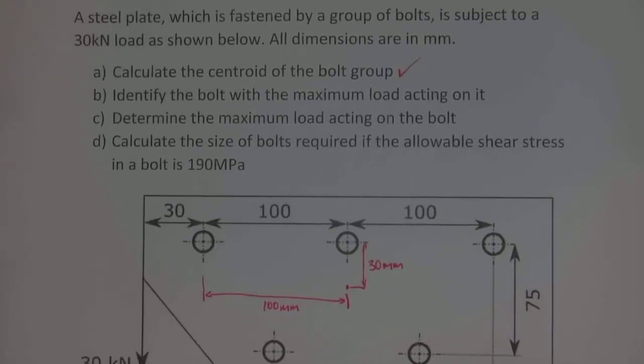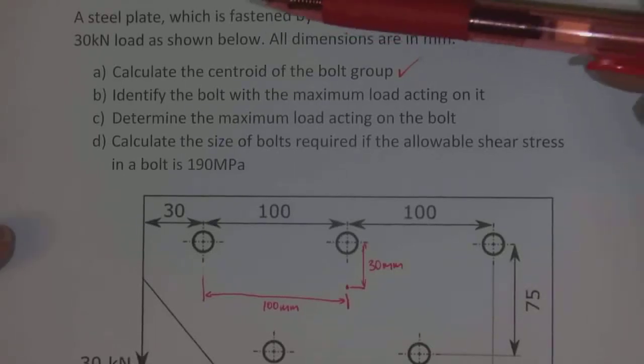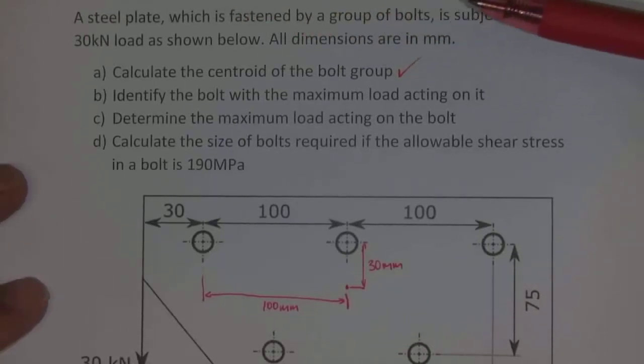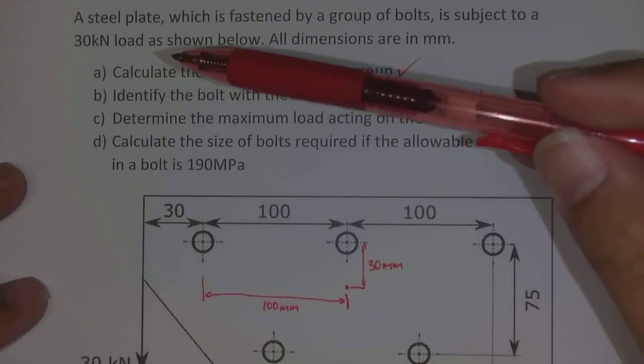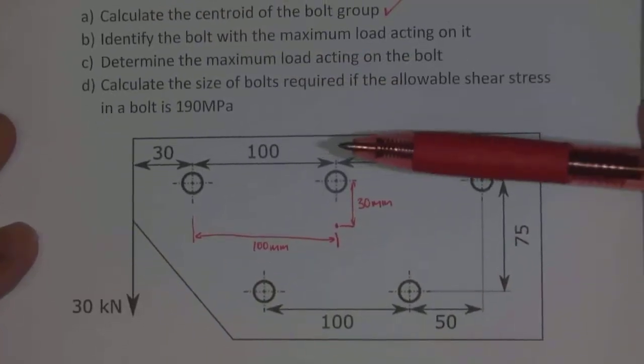Hi guys. So in this video we're continuing to solve this question where we have a steel plate which is fastened by a group of bolts. It's subjected to a 30 kilonewton load as shown in the diagram below.